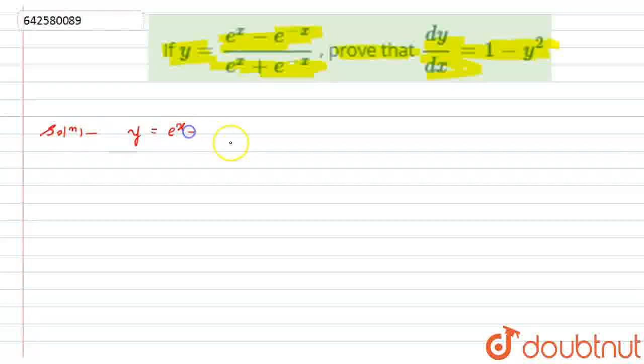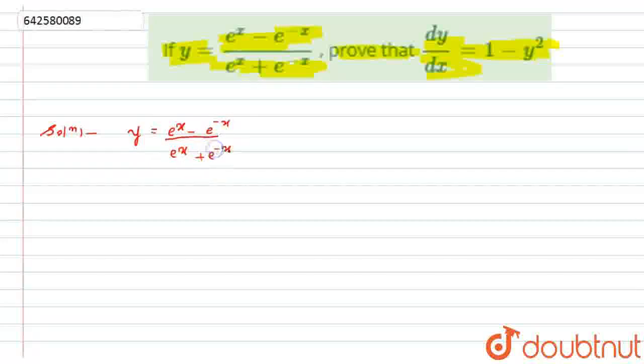We have y = (e raised to x minus e raised to minus x) divided by (e raised to x plus e raised to minus x), and we have to prove this one.